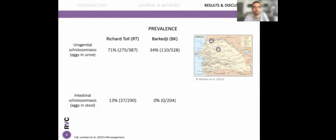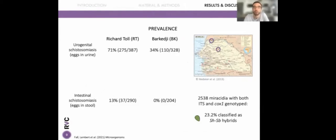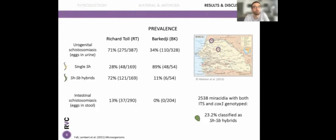The prevalence of urogenital schistosomiasis was higher in Richard Toll than in Barkédji, and intestinal schistosomiasis was only present in Richard Toll. Overall, more than 2,500 miracidia were genotyped for both ITS and COX-1, and 23.2% of miracidia were classified as hybrids between haematobium and bovis. The prevalence of hybrids was higher in Richard Toll than in Barkédji, and for intestinal schistosomiasis only Schistosoma mansoni was detected.